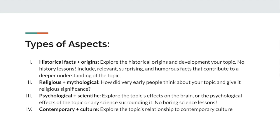It's really important that you don't make this a boring history lesson, but you want to include relevant, surprising, and humorous historical facts that contribute to a deeper understanding of the topic. Second, like we saw with Ronan's speech, oftentimes there's a religious and mythological aspect — how did early peoples and cultures think about the topic? What gods did they give it? What religious significance did it have? Another thing I typically see is the psychological and scientific effects or implications of the topic. Ronan explored how the actual science of the brain relates to intelligence and went into the psychological aspects of the impact that music has on intelligence. Make sure this doesn't become a boring science lesson.